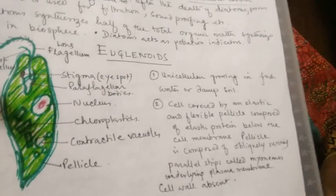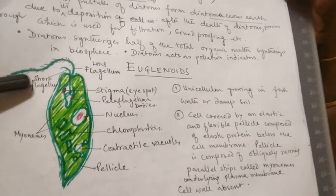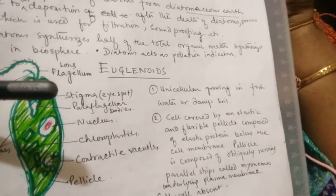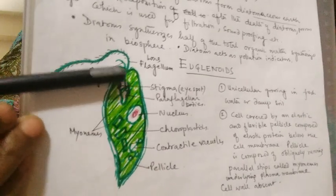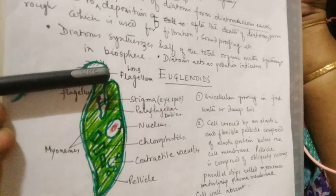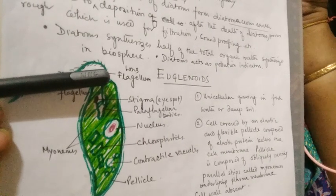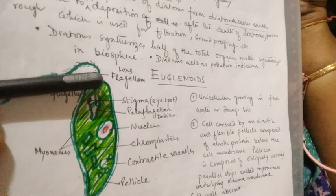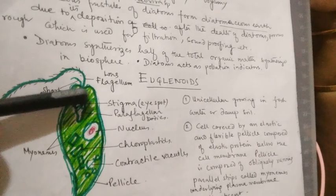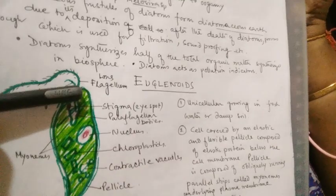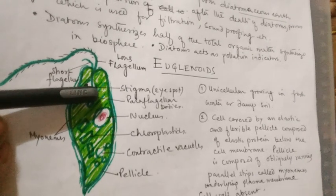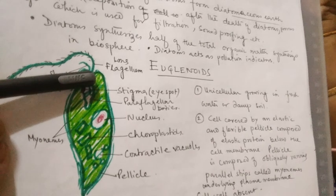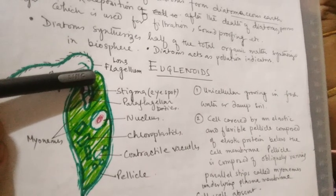Euglenoids have two different types of flagella — one long and one short — which is called heterokont flagella. They arise from a point called blepharoplast and are united at a point called the paraflagellar body. The paraflagellar body is photosensitive.